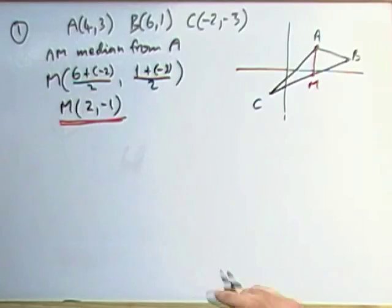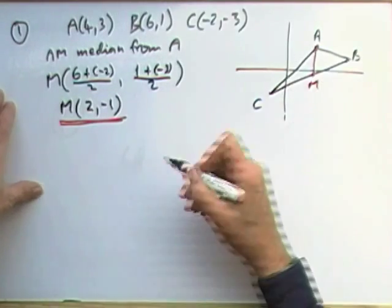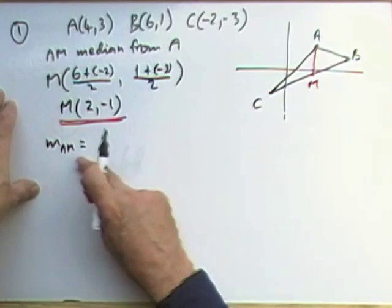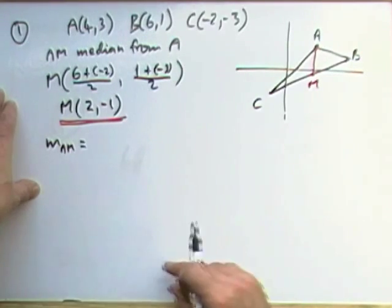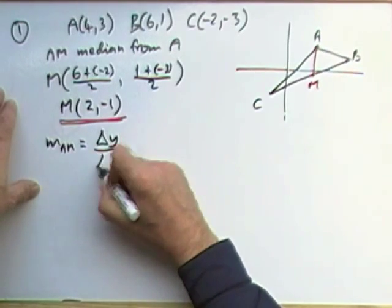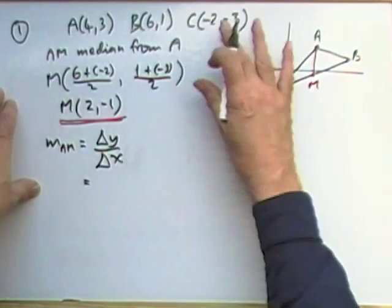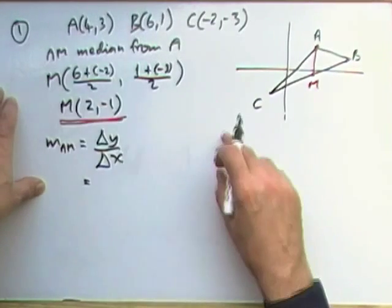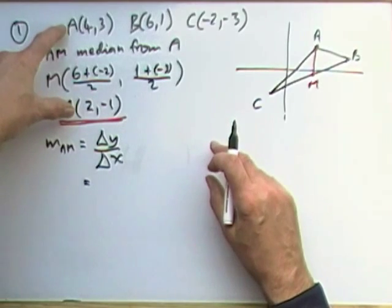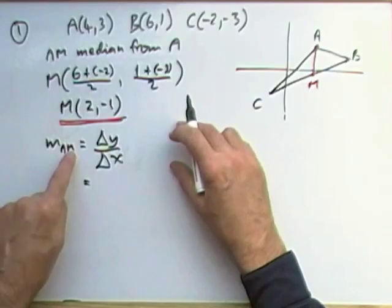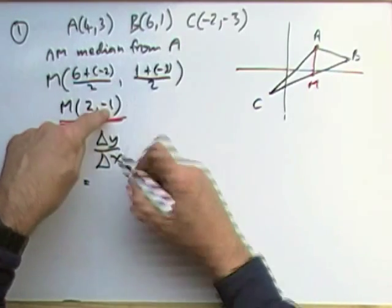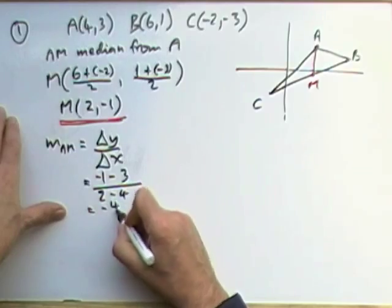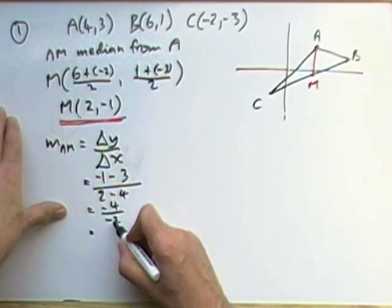The next thing, I'll need the gradient of the line AM. Well, I know two points on it, so I'll do the gradient of AM. If there's lots of gradients to be worked out, you should always put down a little note of which line segment you're doing. It'll be the difference in the Y coordinates over the difference in the X coordinates. I've got A to M, these two points here. Negative 1 take away 3 over 2 take away 4. That gives me negative 4 over negative 2, so that gives me a gradient of 2.